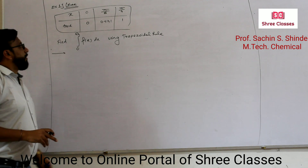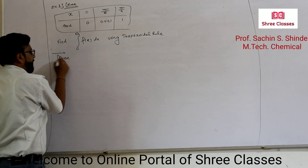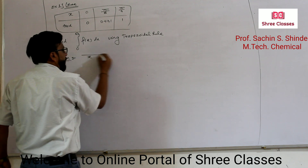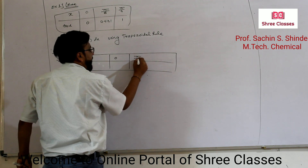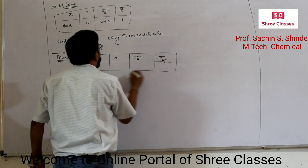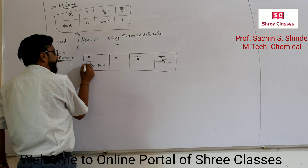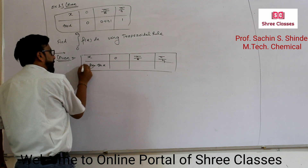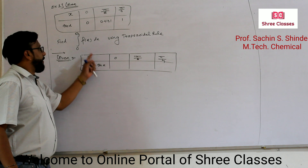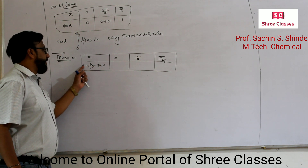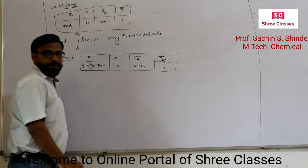Now see here. This is your problem — Example 1 using the Trapezoidal Rule. x values are 0, π/8, π/4, and tan(x) is your f(x), which is nothing but y. The y values are 0, 0.4141, and the last value is 1.